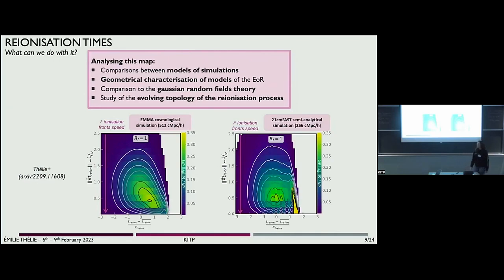The measurements that we can do on this map — we will show that we can also compare them to Gaussian random field predictions. The aim of all of that is to study the evolving topology of the reionization process.